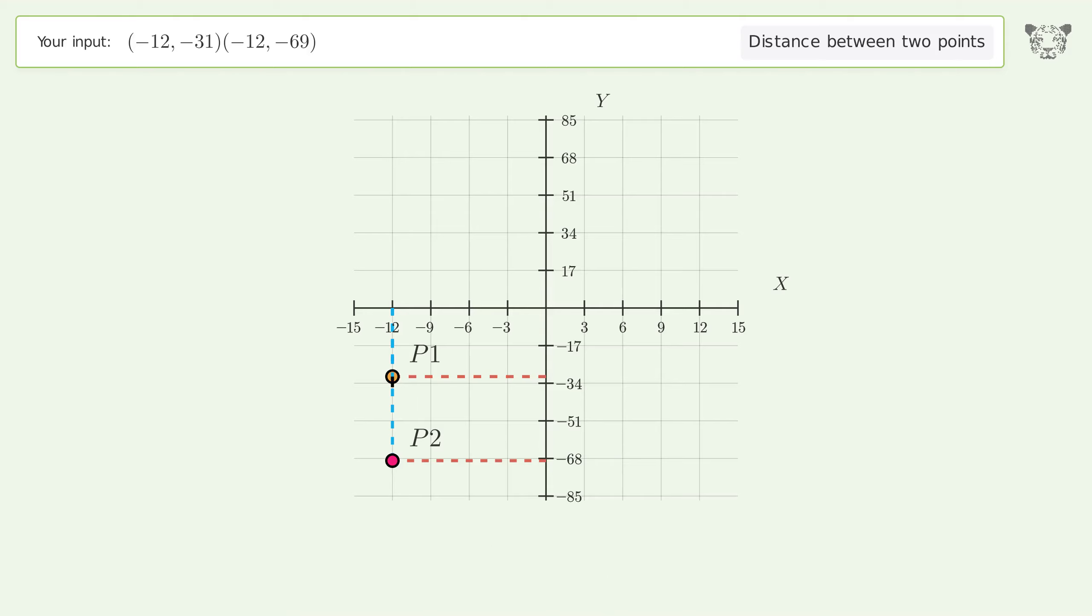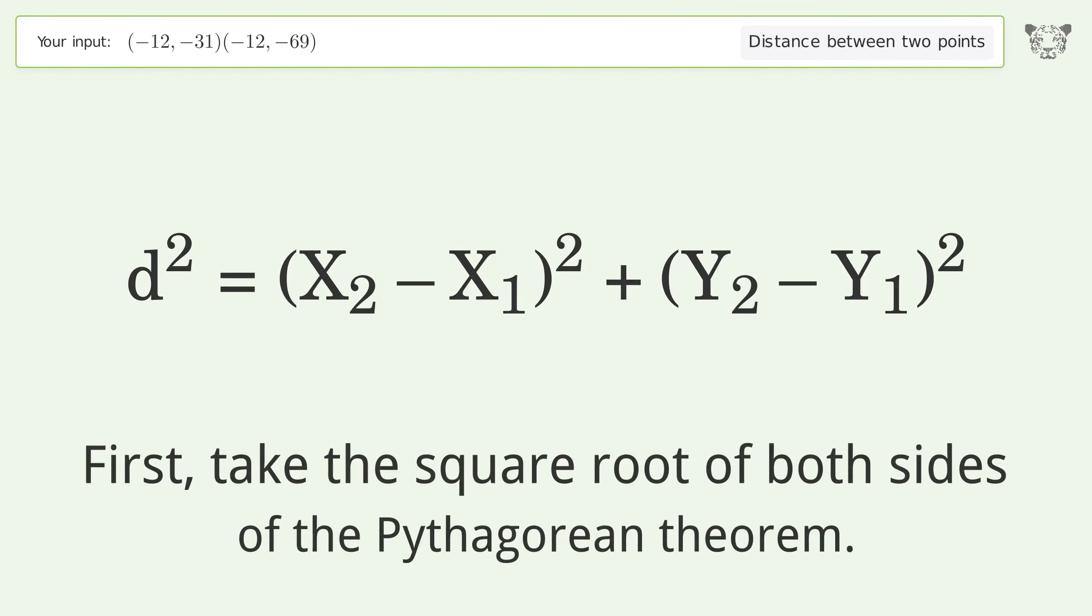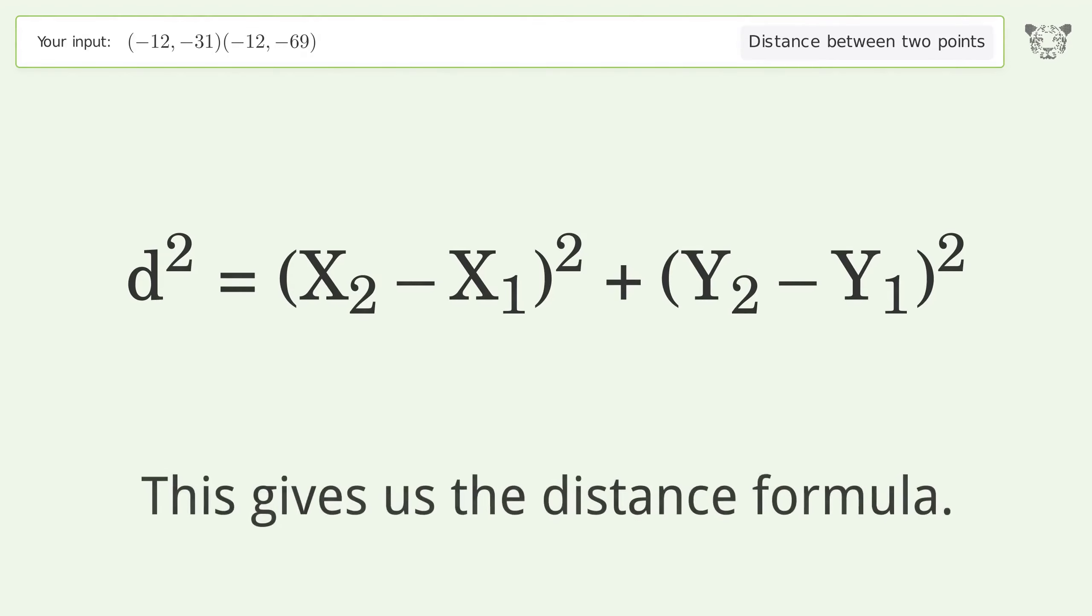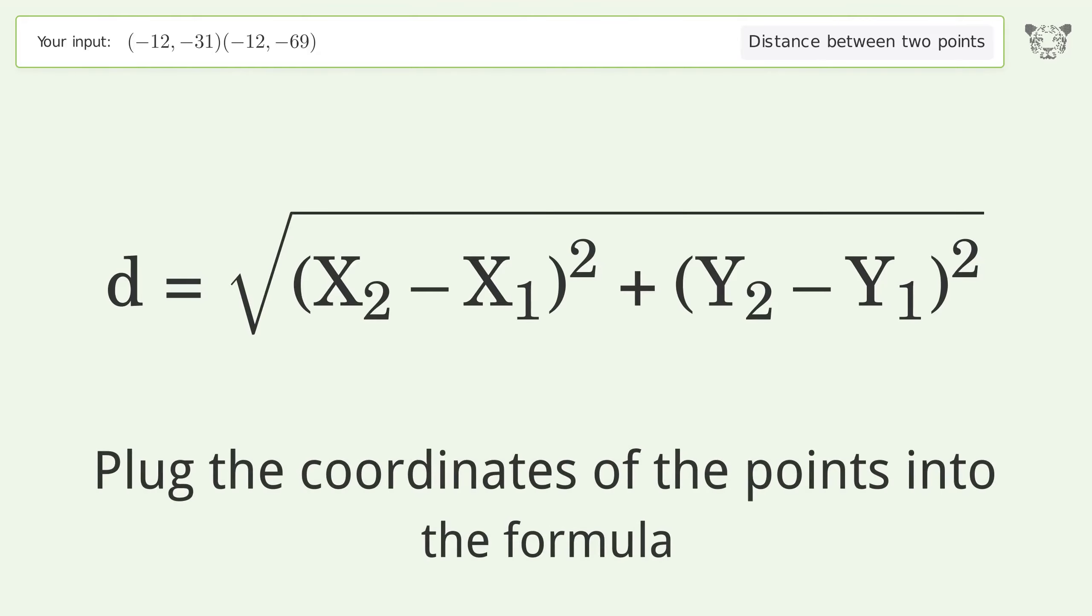First, take the square root of both sides of the Pythagorean theorem. This gives us the distance formula. Plug the coordinates of the points into the formula.